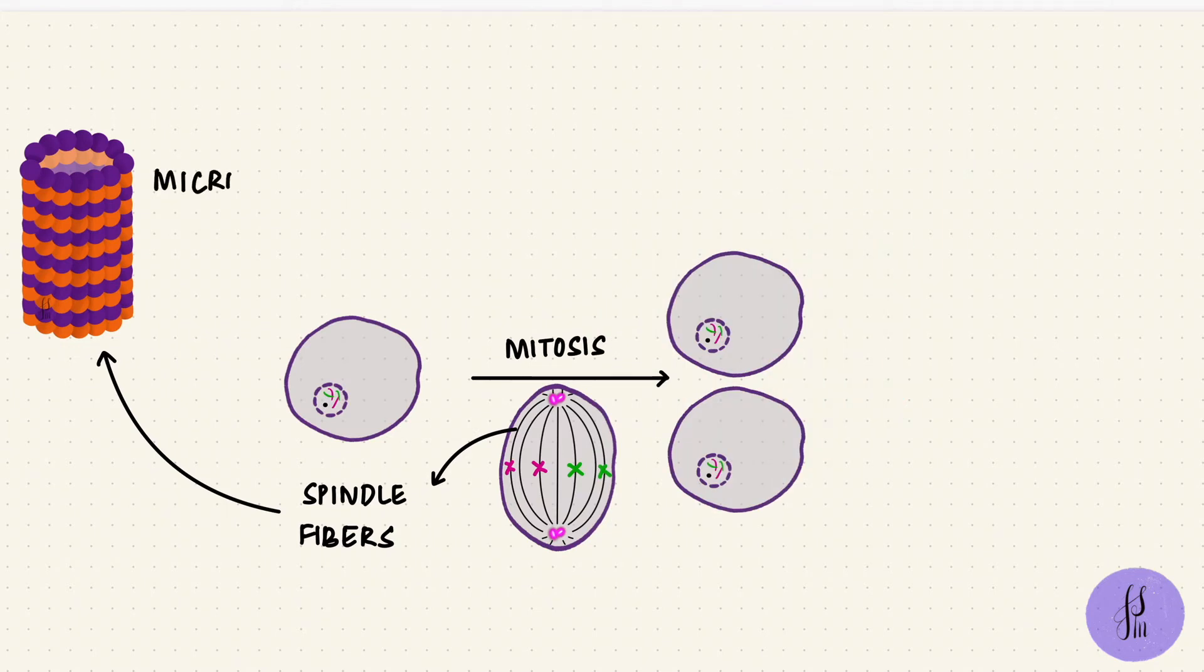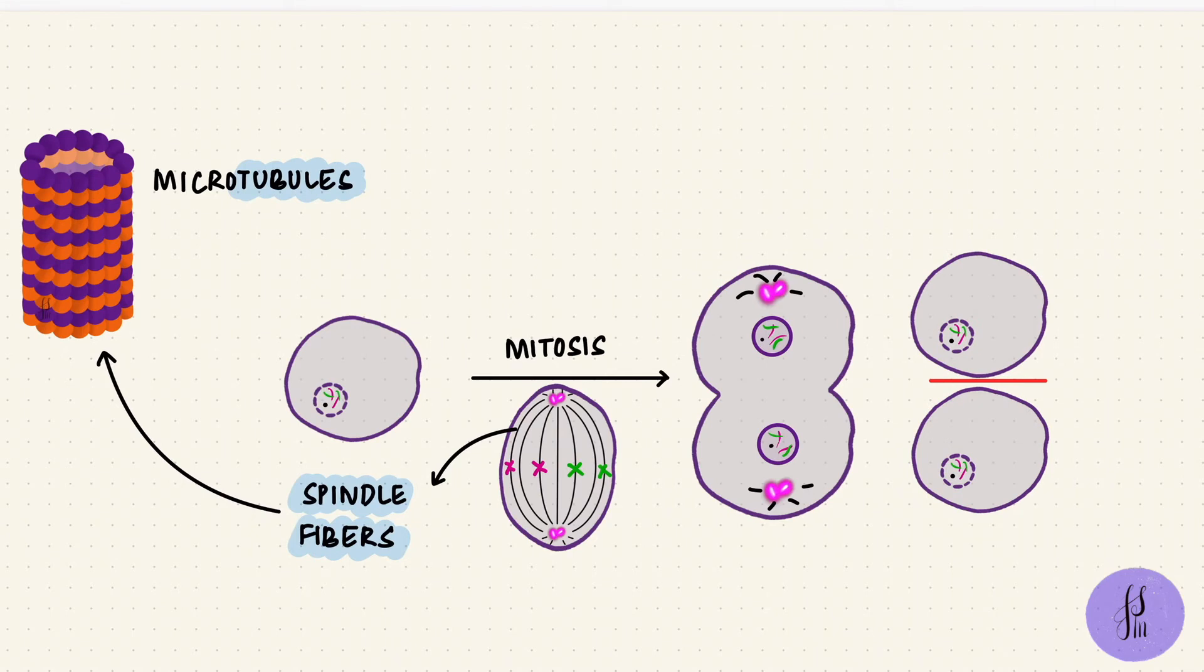Remember how microtubules form the spindle fibers during cell division? They help separate the chromatids. But the last step of mitosis, when the cytoplasm divides, that is by microfilaments. They contract and form a cleavage furrow, ultimately splitting the cell into daughter cells. So microfilaments are needed for cytokinesis.